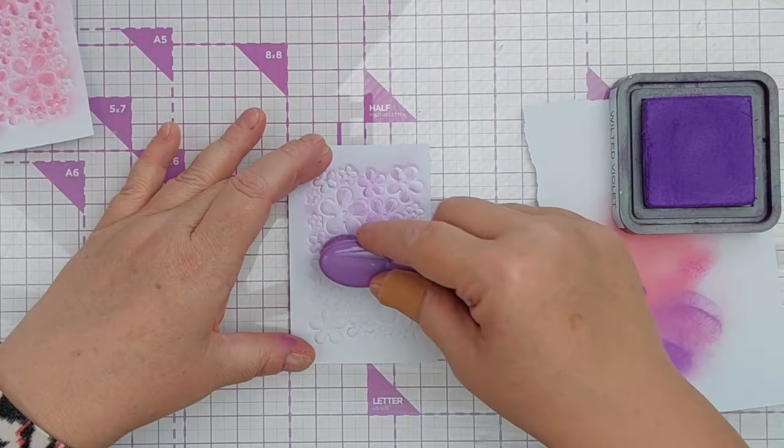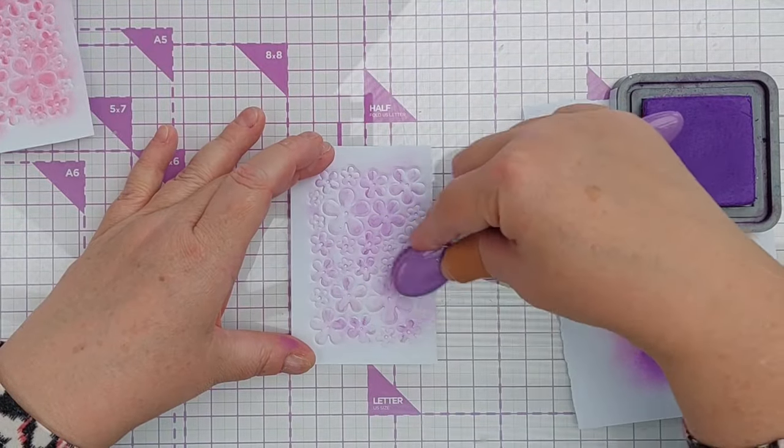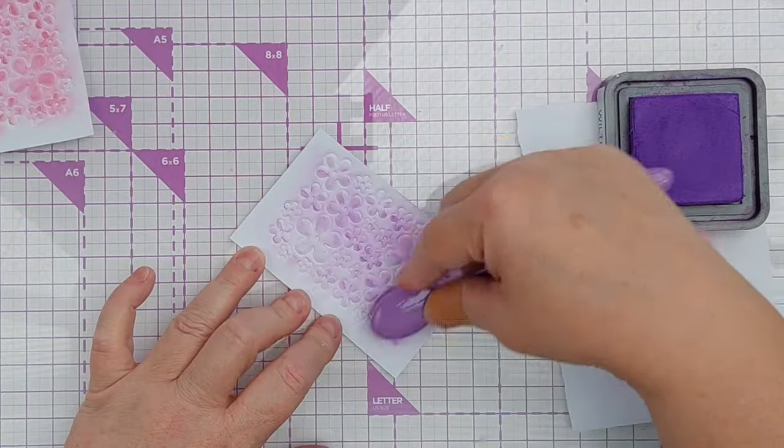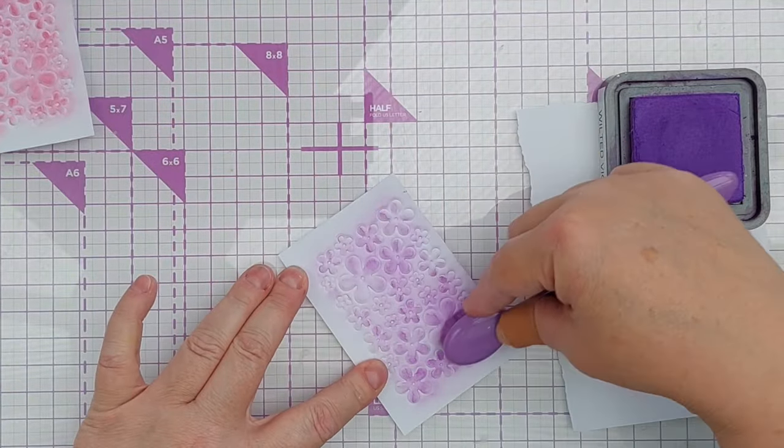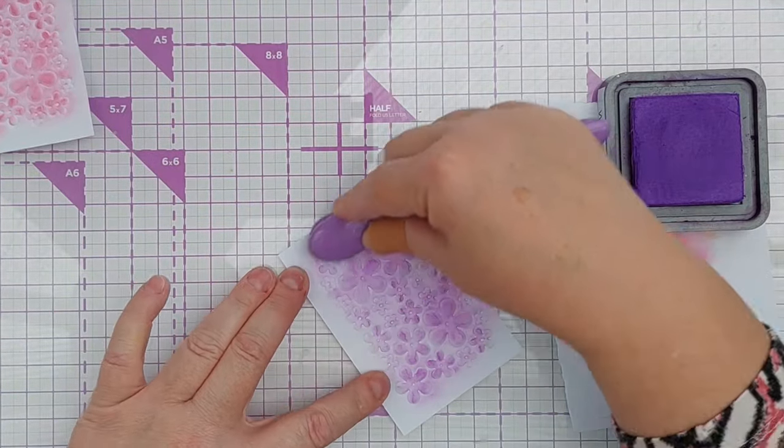I did that with picked raspberry which matched the pink in the photograph and then I did the other embossed panel with wilted violet because that matched the purple.